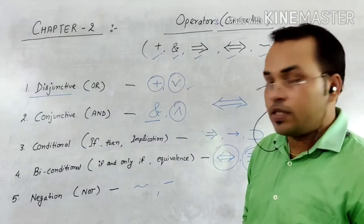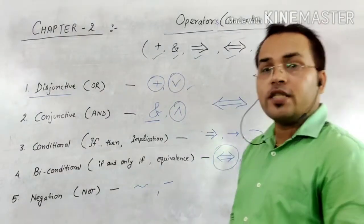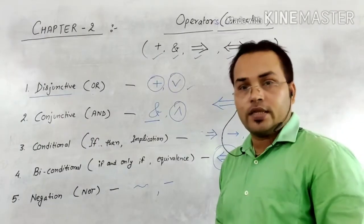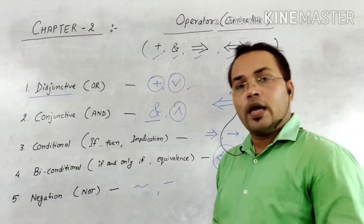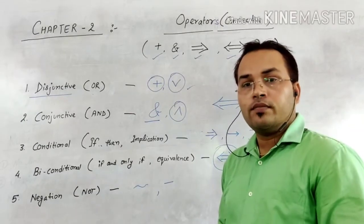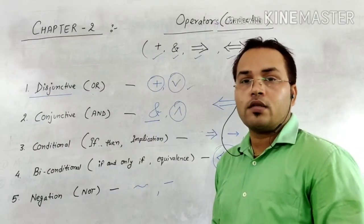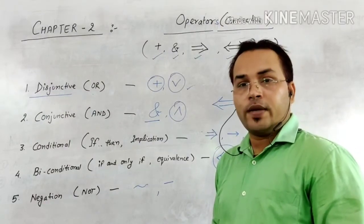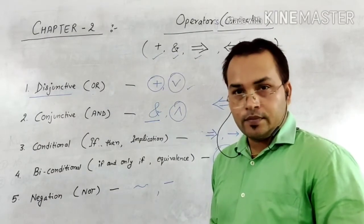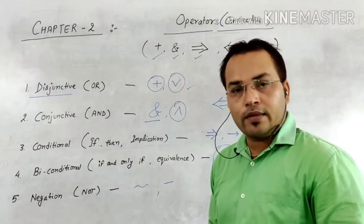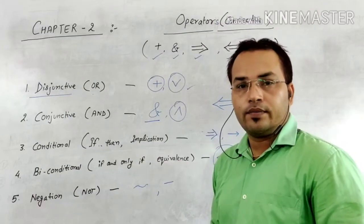Now the last one is negation. Negation says whatever the condition is, it doesn't matter — if P is true, then negation of that means P is false. That means if I say you have to do this work and you apply the negation operator, then that means you will not do that work.